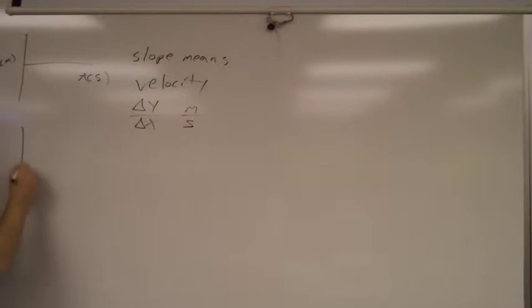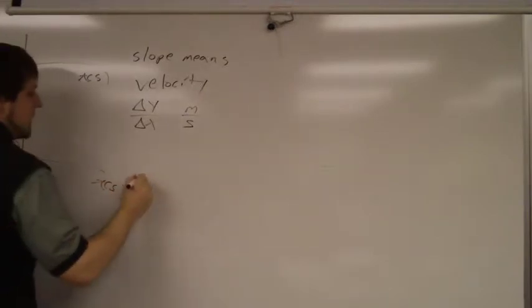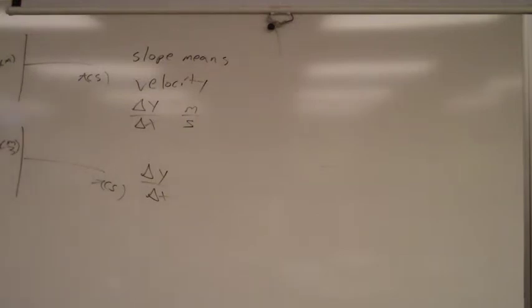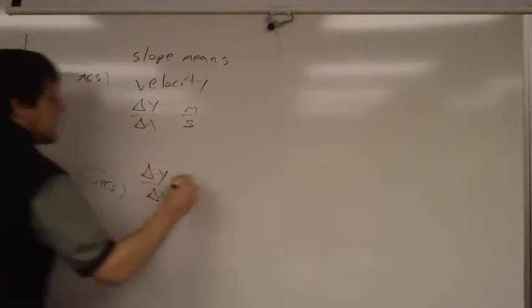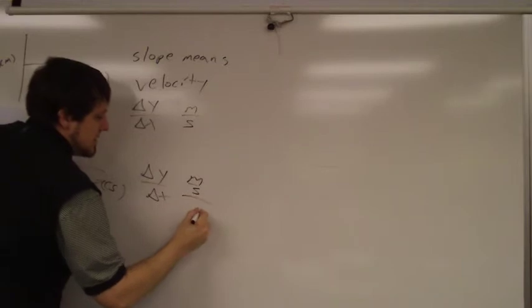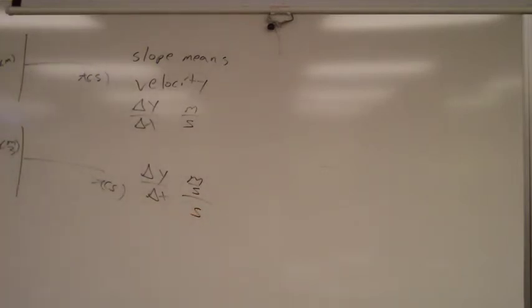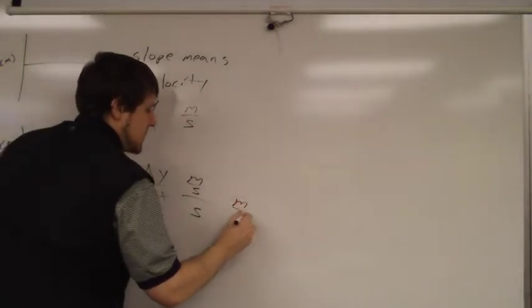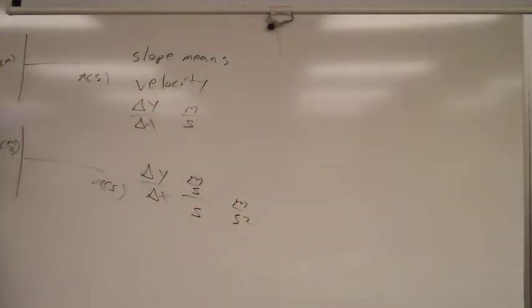On a velocity time graph, what does that delta Y over delta X, what are the units? What's the change in Y, the units on a velocity time graph? Meters per second. Change in X is in seconds. A meter per second per second is an improper fraction, that's why there's the algebra requirement for this course, is a meter per second squared.